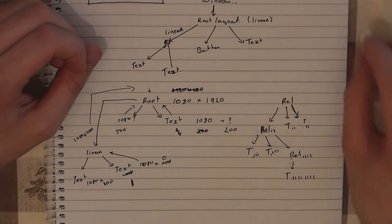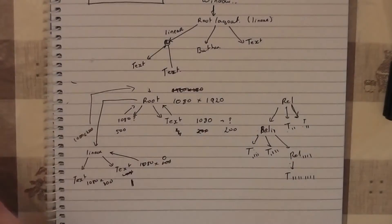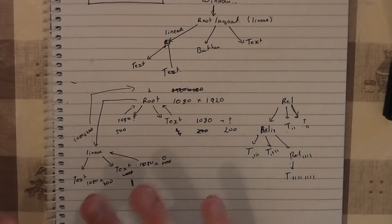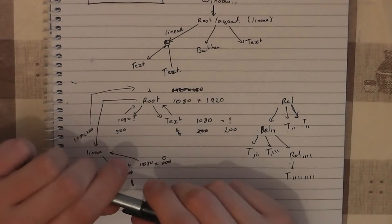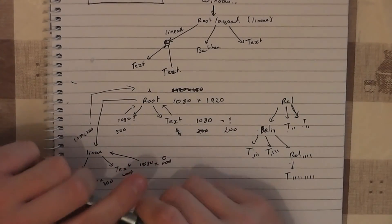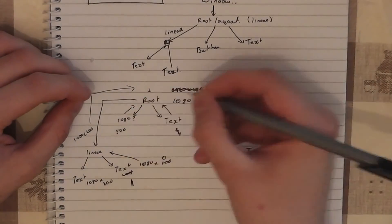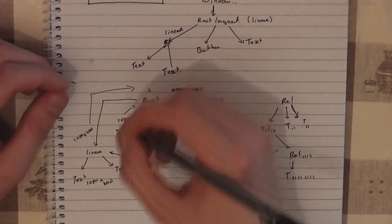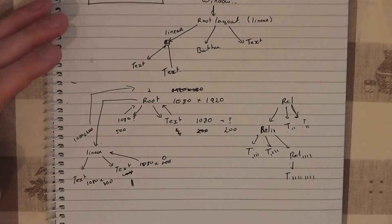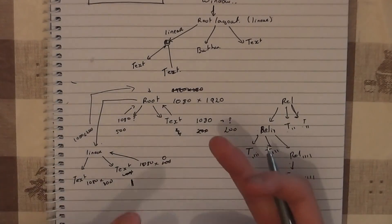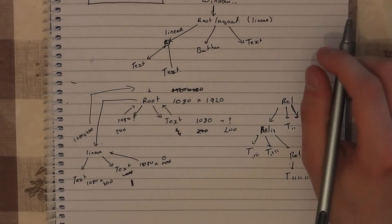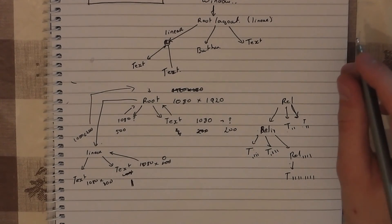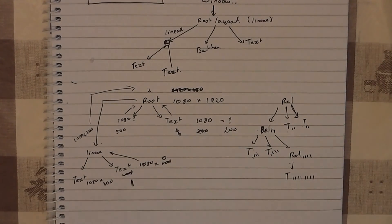So the general rule of thumb is: never, ever nest relative layouts, and never nest linear layouts with weights. Relative layouts are great because you can make your hierarchy very flat. Linear layouts are okay to nest, but don't nest them too deeply. The more view groups you nest, the more complicated the layout and measure stages get. The more time it's going to take to do all the maths, the slower your view is going to respond. That's it for the measure pass — next time we're going to talk about the layout pass.